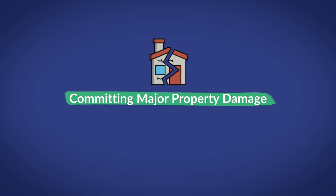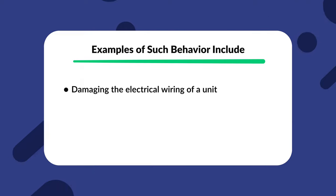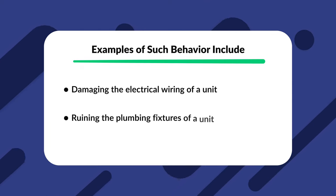Number four: committing major property damage. In this case, tenants are usually not allowed to renew their lease, and the landlord has to issue a seven-day notice to quit. Examples of such behavior include damaging the electrical wiring of a unit and ruining the plumbing fixtures of a unit. The tenant must leave the premises before the end of the notice period to avoid eviction. The landlord can continue with the eviction process if the tenant refuses to leave after the seven-day grace period.